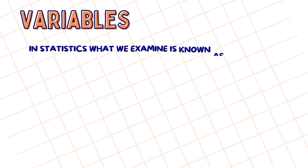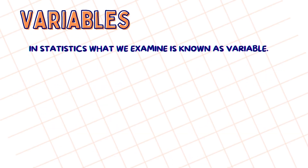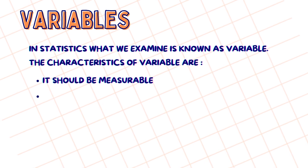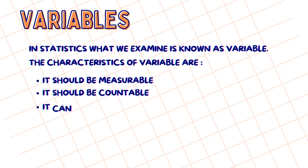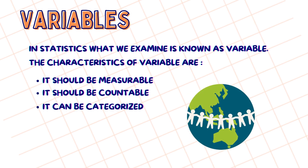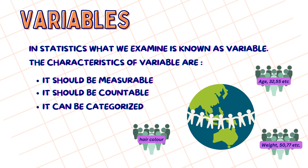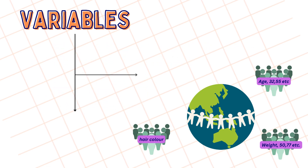In statistics, what we examine is known as a variable. The characteristics of a variable are that it should be measurable, it should be countable, and it can be categorized. For example, in a sample of people, each person may have a different age, hair color, or weight. These all are called variables.